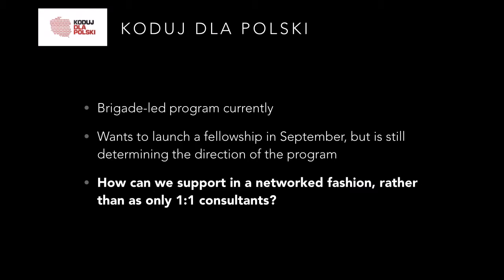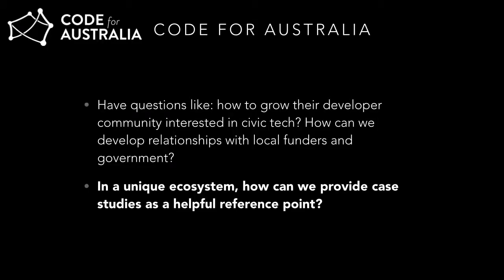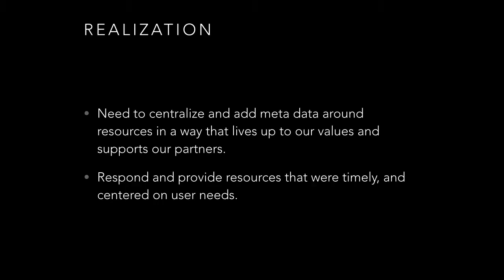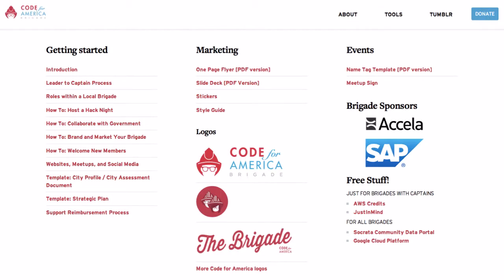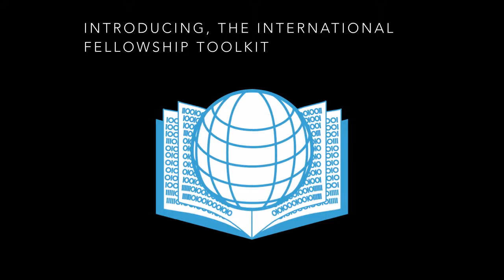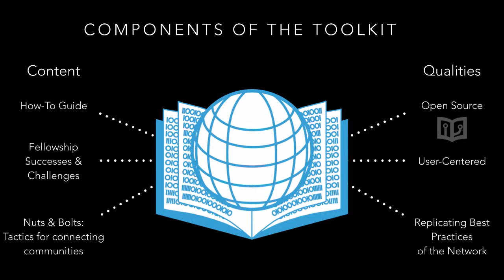When we saw that a lot of the questions they were facing were really similar — both at the tactical and strategic level around how to run a fellowship — we thought about how we can replicate best practices rather than be one-on-one consultants, including for Code for Australia. Following models like the Code for America Brigade toolkit, we are launching an international fellowship toolkit. Its how-to guide will be composed not just of how Code for America runs its fellowship, but also best practices and resources from our partners.